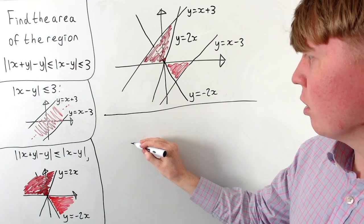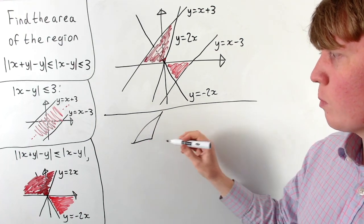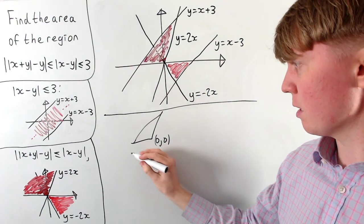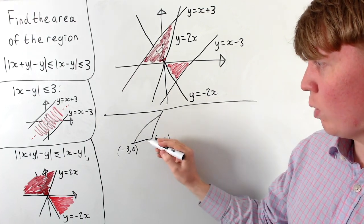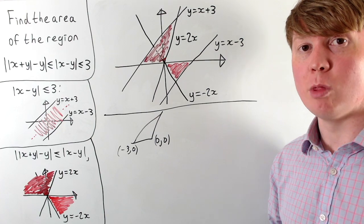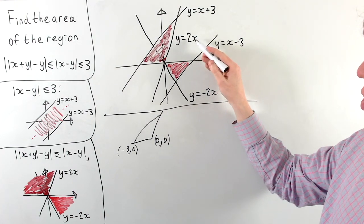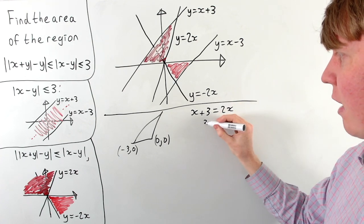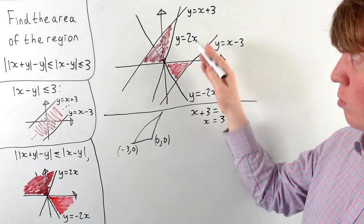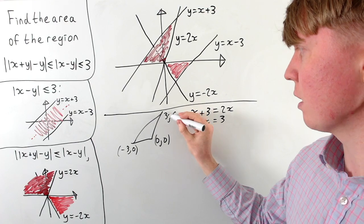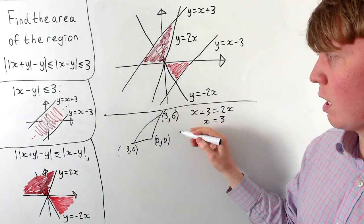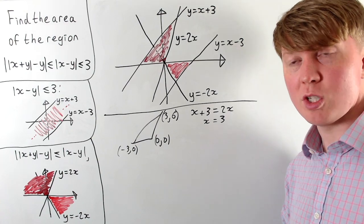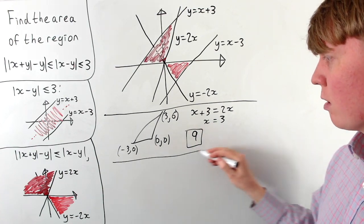For the top triangle, the vertices are the origin (0, 0), the point where y equals x plus 3 meets the x-axis which is (minus 3, 0), and the point where y equals 2x meets y equals x plus 3. Solving x plus 3 equals 2x gives x equals 3, and substituting back gives y equals 6, so the top vertex is (3, 6). The base is 3 units wide and the perpendicular height is 6, so the area is 3 times 6 divided by 2, which equals 9 square units.